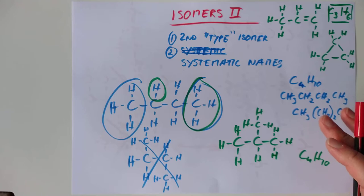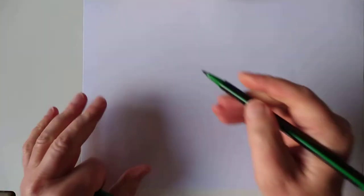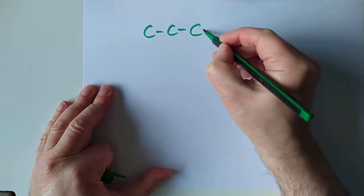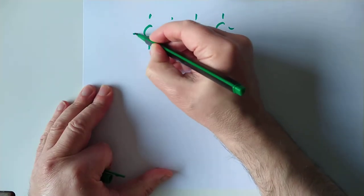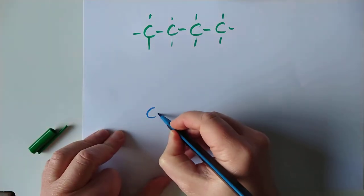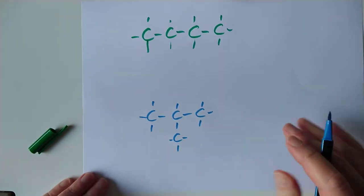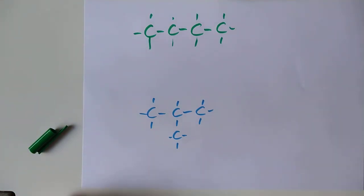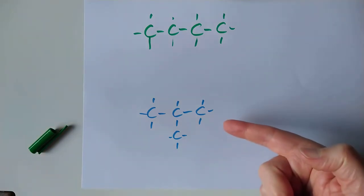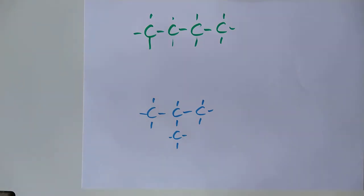The second thing I would like to tackle today is names, systematic names for the alkanes. Why do we even need systematic names? Don't we know the names already? Methane, ethane, propane, butane? I just showed you that this molecule and this molecule have identical formula but different structures. That's the definition of an isomer. So you can't call them both butane.